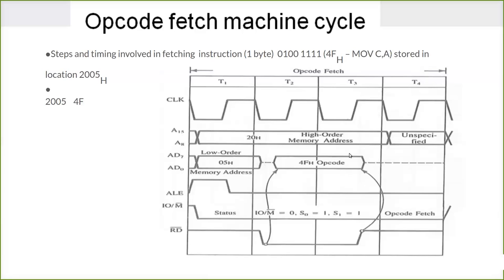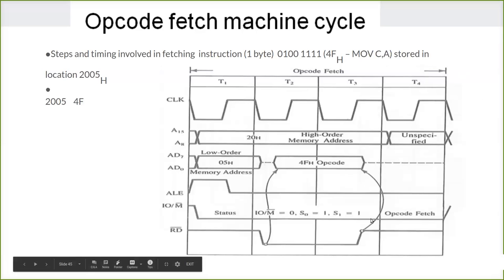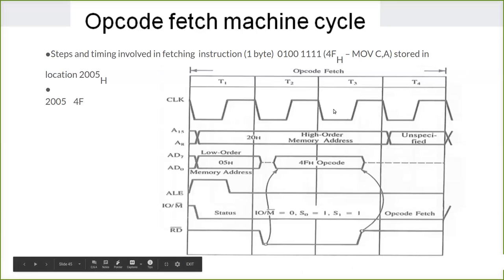After T4, the fetched data — that is 4F hex — is placed into the instruction decoder. The instruction decoder decodes the instruction, and whatever is specified in the instruction is executed: move the value of the accumulator to the C register. So this is the opcode fetch, which is also a memory read at the same time — both together in a single byte instruction.